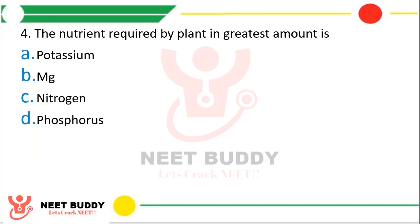Question 4: Nutrient required by plant in greatest amount is? Potassium, magnesium, nitrogen, or phosphorus. The correct answer is Option C, that is nitrogen is required by plant in greatest amount.